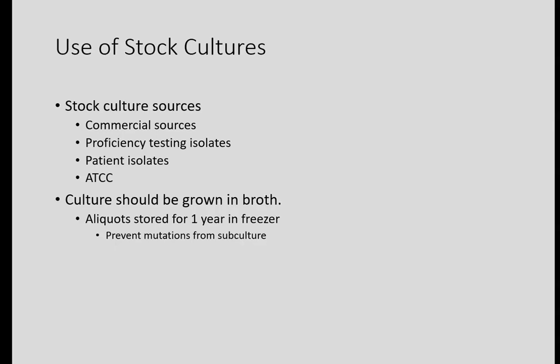If you have organisms that you need to keep, you put them in broth, soak these little porous beads in the broth, and the beads go into a freezer set at negative 70 degrees Celsius so they maintain their integrity and their DNA. After you subculture repeatedly for so many times, you have to start a new culture from scratch — from a new ATCC bug or from one of these frozen aliquots — because if you keep repeatedly taking the same thing, it's going to change over time due to periodic mutations.